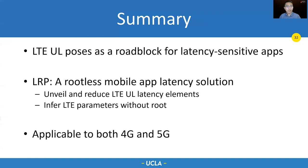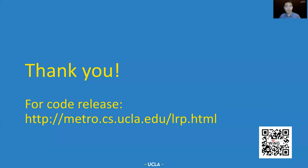To conclude, in this work we unveil multiple latency elements in LTE uplink that pose as roadblocks for latency-sensitive applications. We design a solution, LRP, to reduce the latency for mobile applications without root privilege. Our evaluation shows that LRP works well for both 4G and 5G networks. This is a step towards low latency applications in 5G and 4G, and we hope there's more design for different applications that have requirements for low latency. We have released the data and source code — you could visit our website or scan the QR code for more details. Thank you very much.